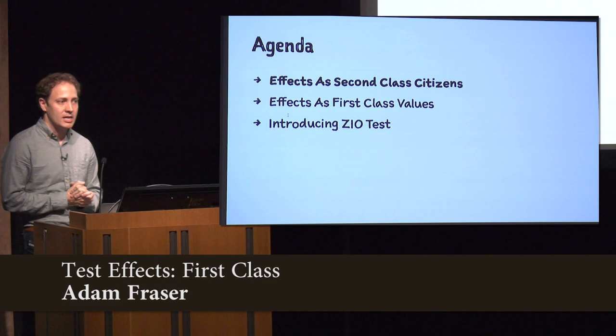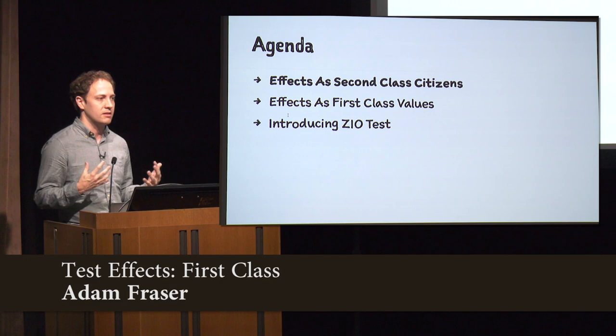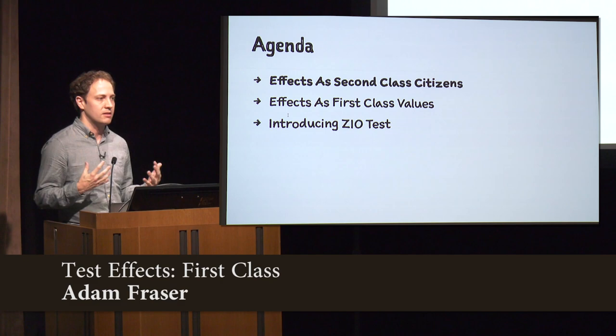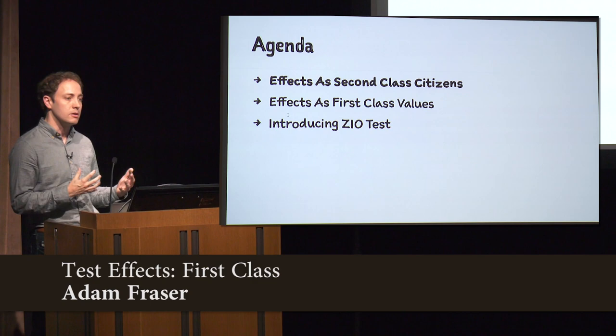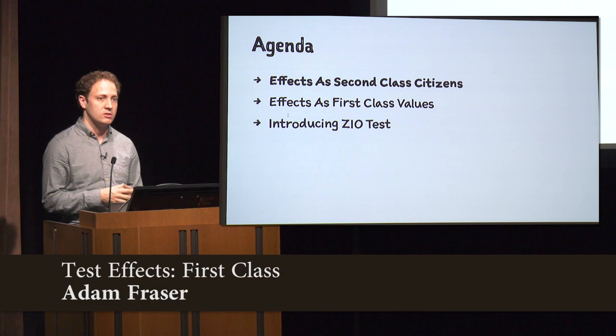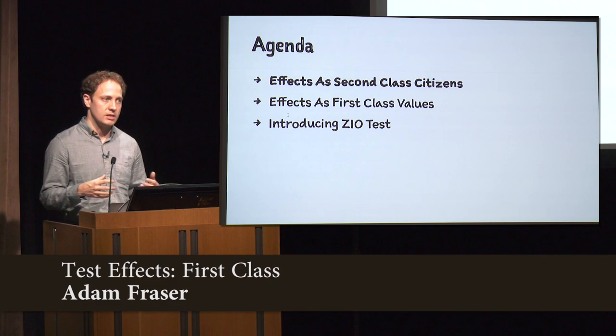I'm really going to try to talk about three things today. First, what does it mean for effects to be second-class citizens in testing frameworks today, and what are the implications of that? Second, what would it mean for tests to be first-class values? And then third, we'll explore ZIO Test, which is a library that tries to take that idea to its logical conclusion to solve a lot of the problems that we deal with every day when writing tests.